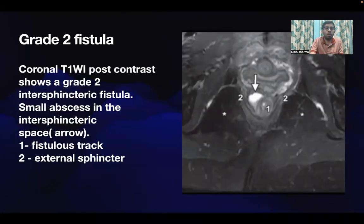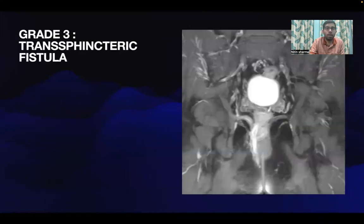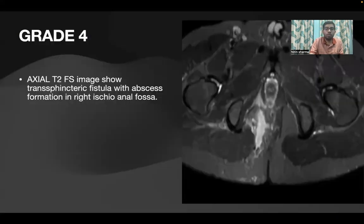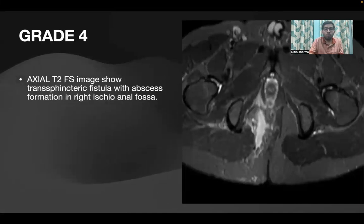This coronal T1-weighted post-contrast image shows a grade 2 intersphincteric fistula; a small abscess is also noted in the intersphincteric space. This is a grade 3 or transsphincteric fistula, where the fistula track can be seen extending outside of both the internal and external sphincter. This is a grade 4 transsphincteric fistula with abscess formation in the right ischioananal fossa.